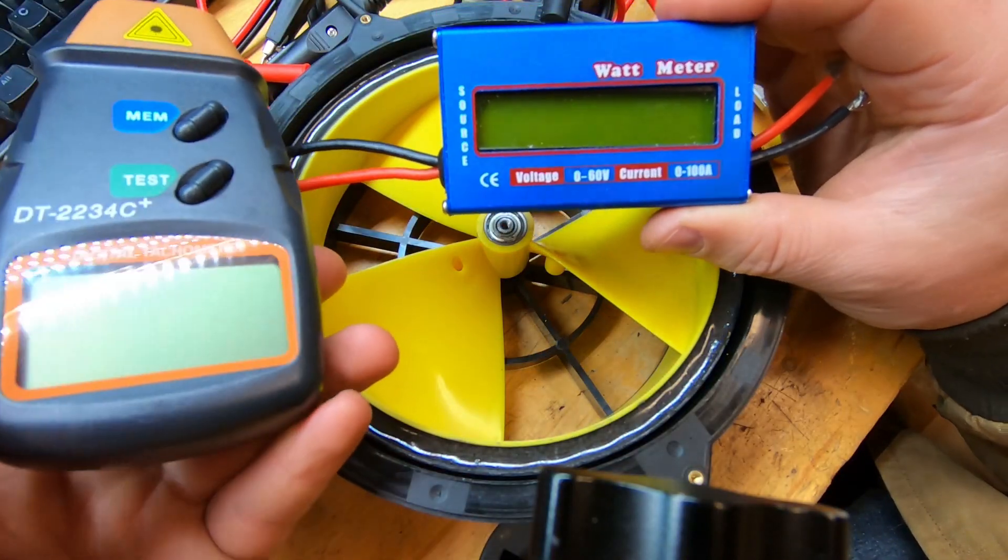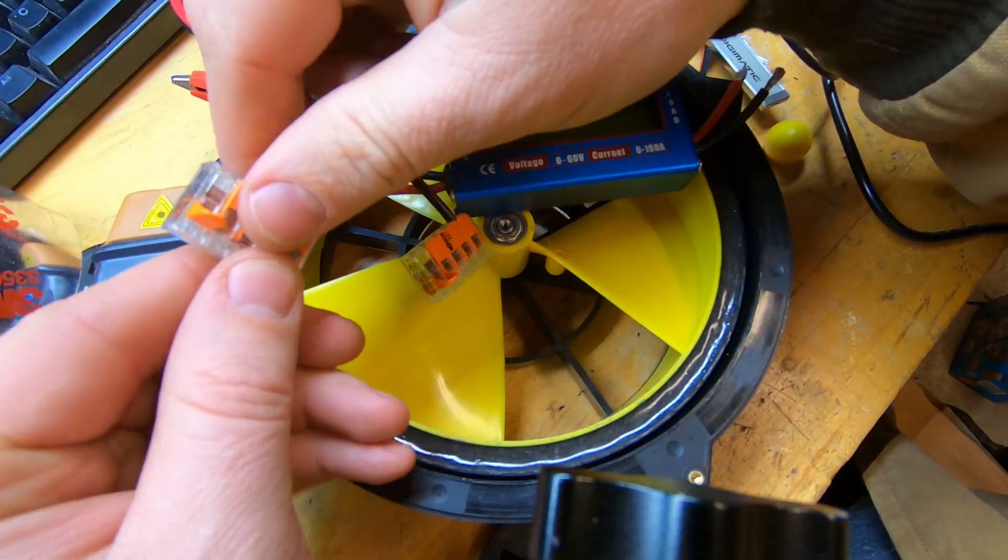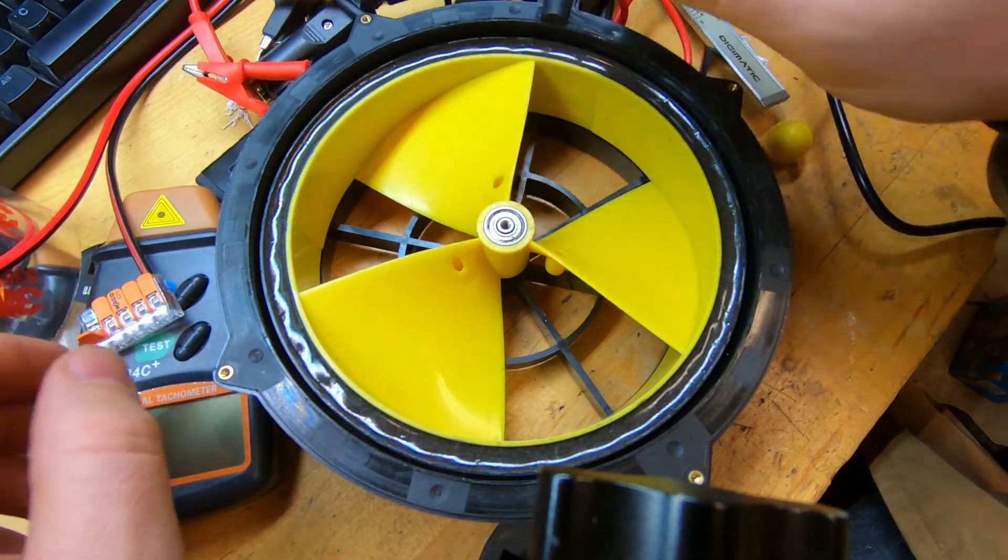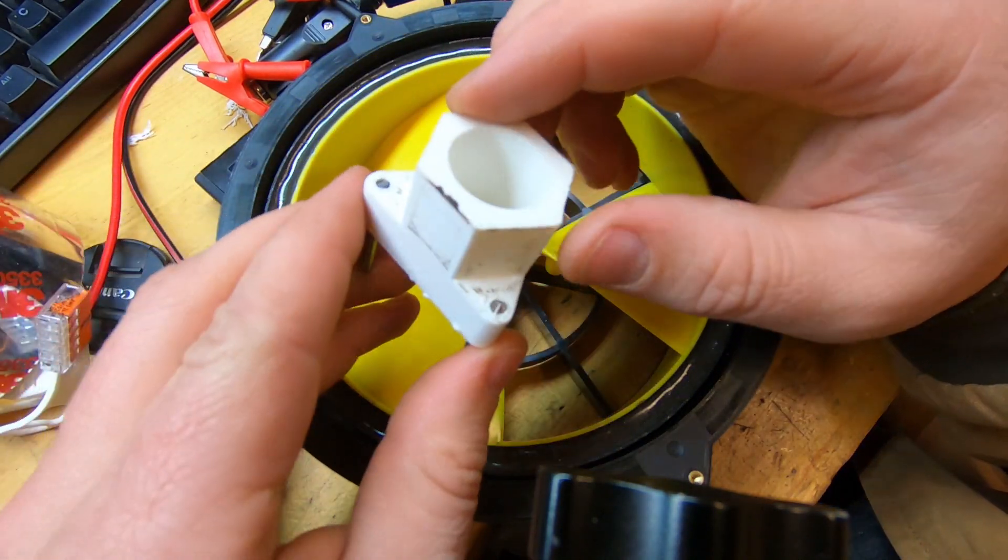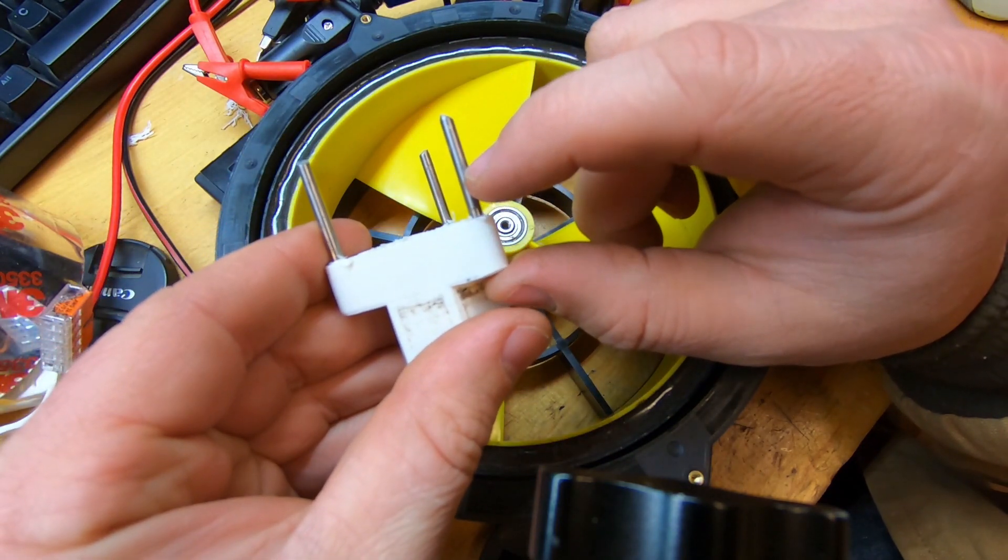Alright. Like, comment, and subscribe. Links to all of these measuring devices are in the description. Even these WAGO lever nuts that I like so much, I use them for testing things like this quickly all the time. The 3D printer that I'm using is an Ender 3 Pro. I did design this myself. They're supposed to be on the bottom of this.